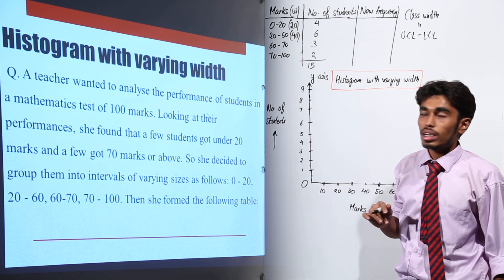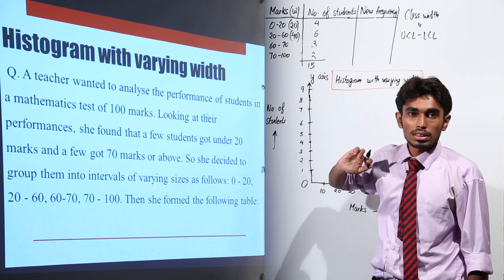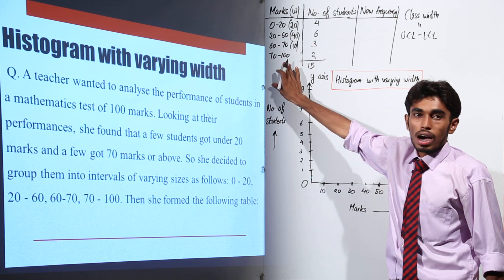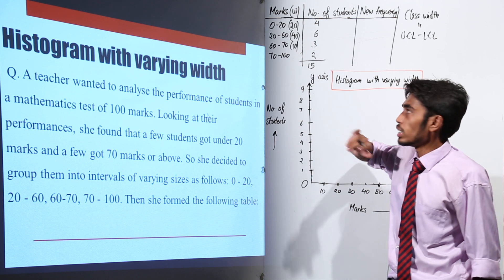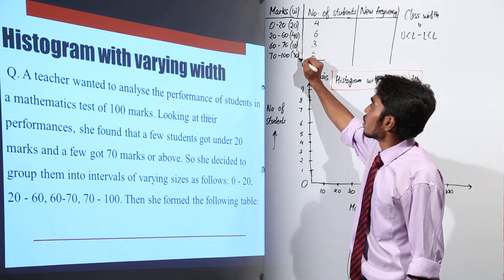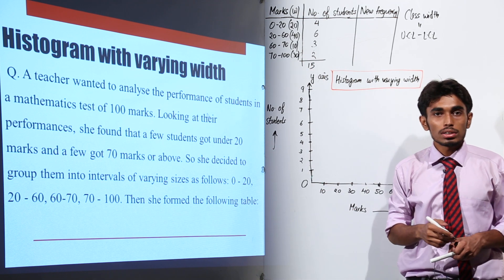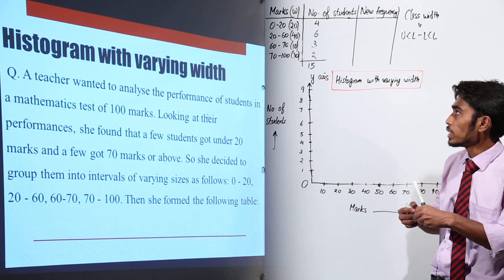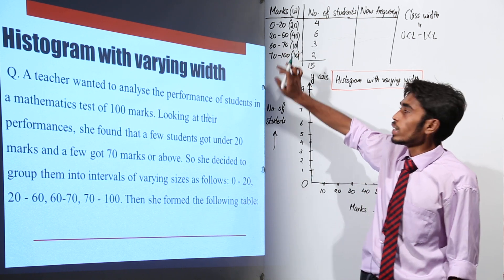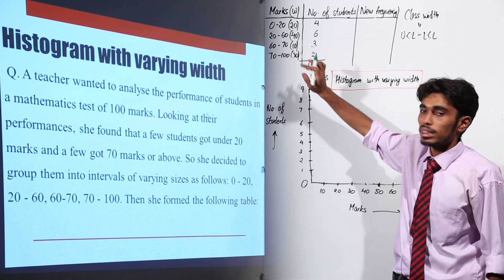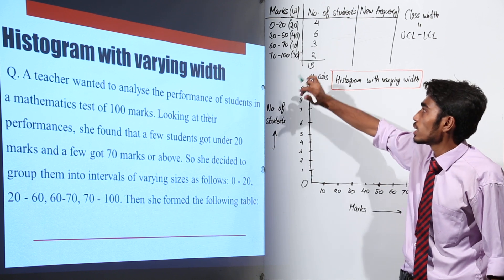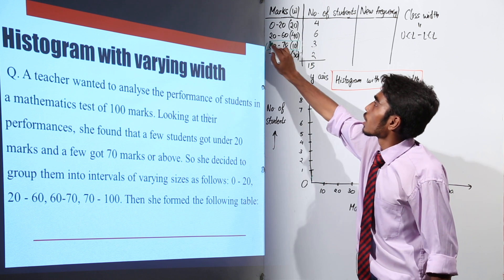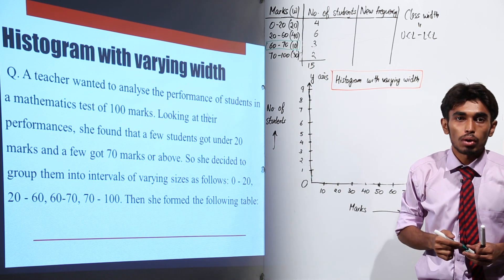For the third class interval, the class width will be 70 minus 60, that is 10. And for the fourth one, it will be 100 minus 70, that is 30. So our objective was to spot the class interval with the minimum class width. As we can see, 60 to 70 is having class width as 10, so this is our required class interval.